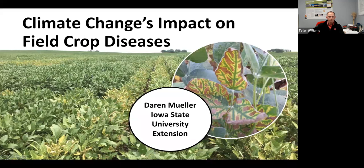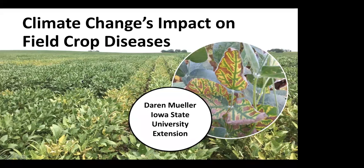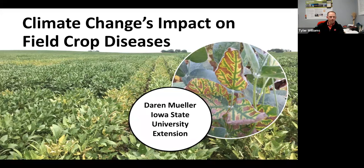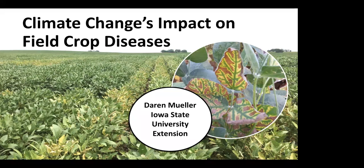All right, hopefully everyone can see the slides and can hear me. My name is Darren Mueller. I'm at Iowa State University in extension and in the plant pathology department. Today's talk is a little bit vague — it's a tough topic to cover. The low-hanging fruit is that climate change can impact crop diseases — spoiler alert, yes it can. But getting all of that organized into a slide set was an interesting path.